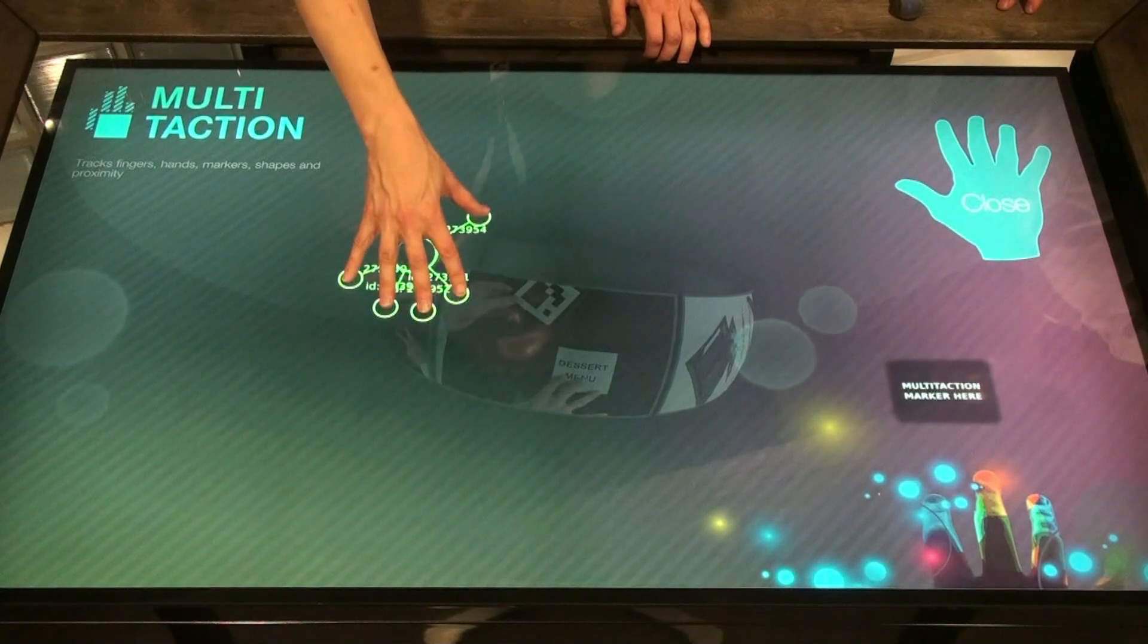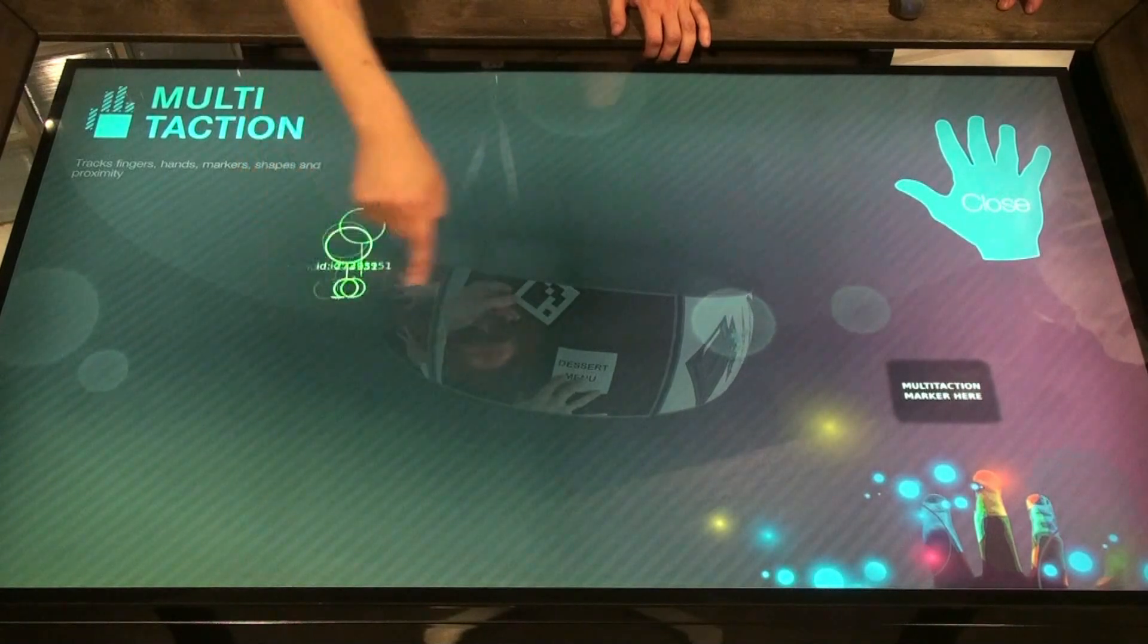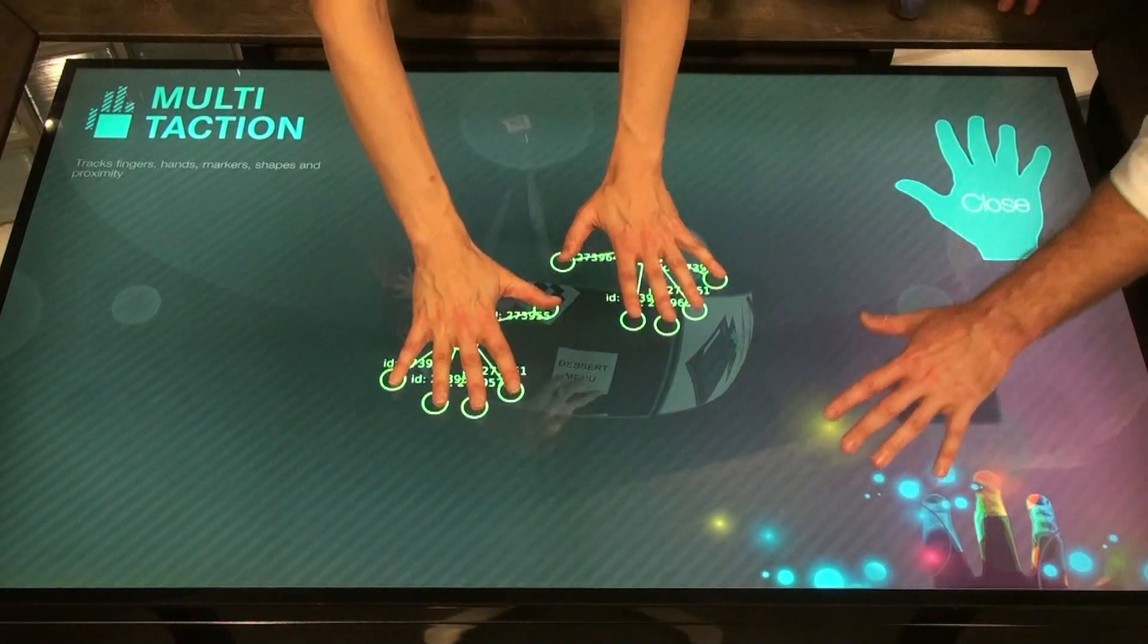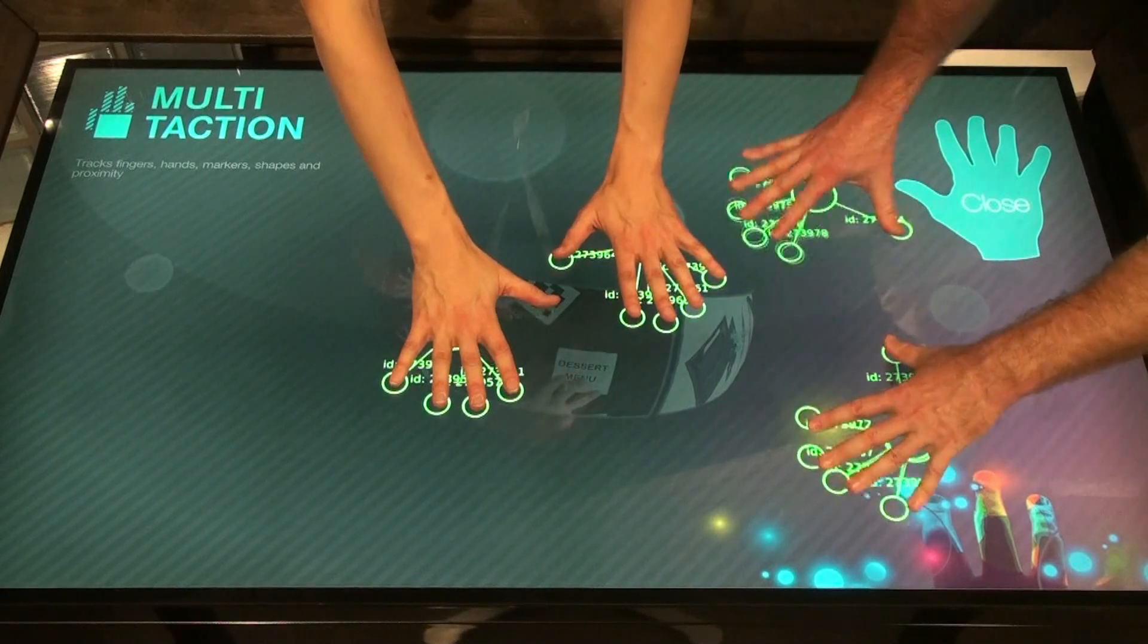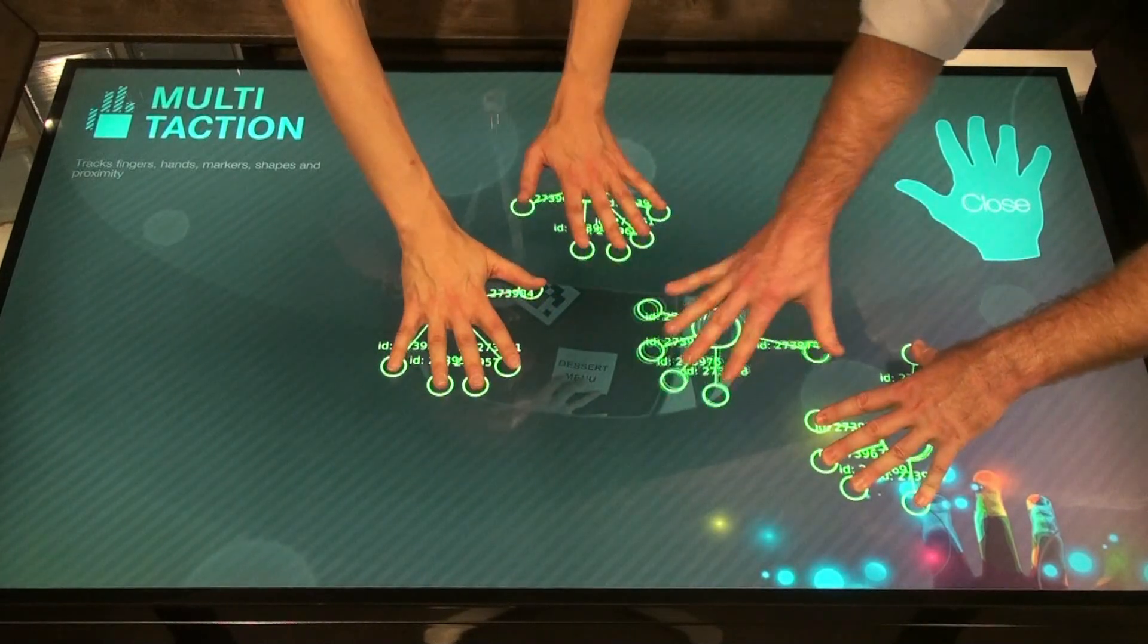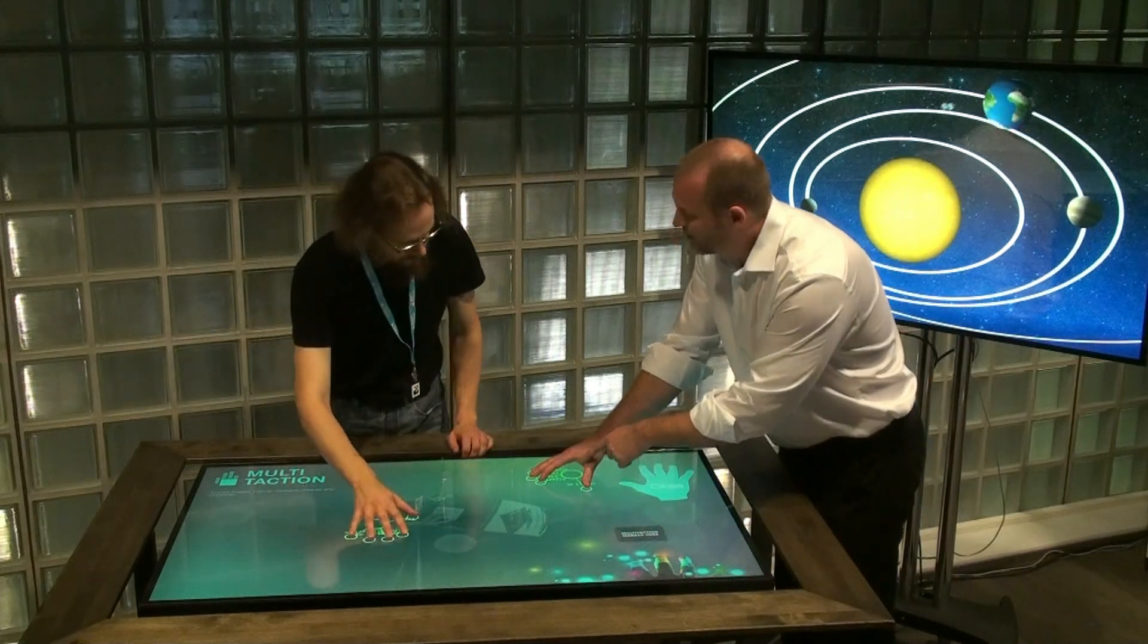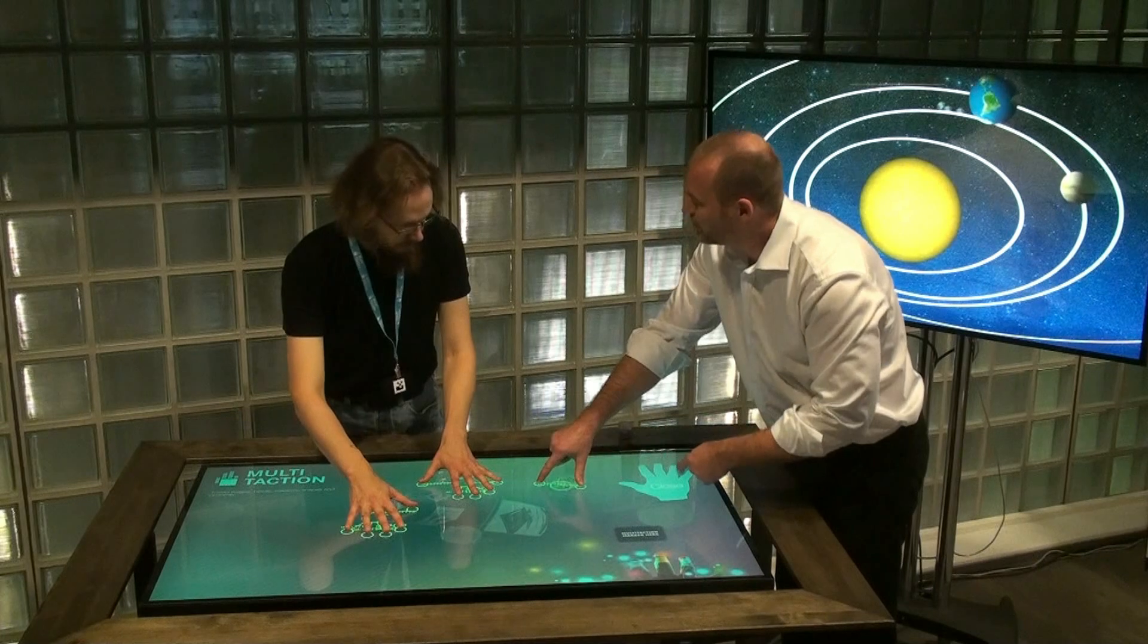The basic thing here is obviously tracking users' fingers. You can track any number of those, so it's in practice unlimited. Usually, the only limit really is how many people you can fit around the display. But this is pretty unusual, right? We can actually see the palm also, not just the fingertips.